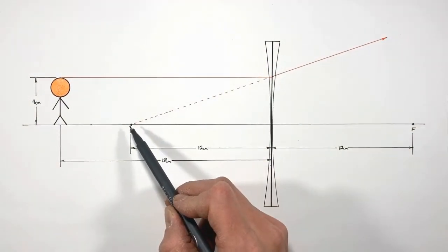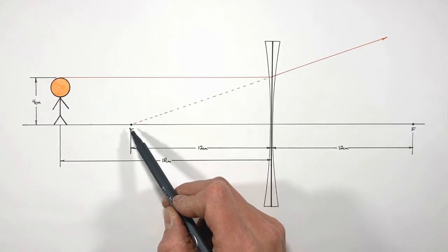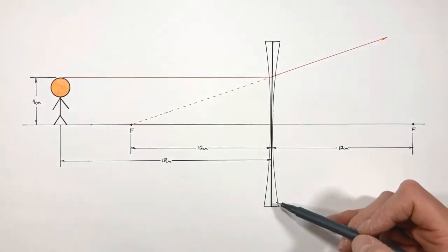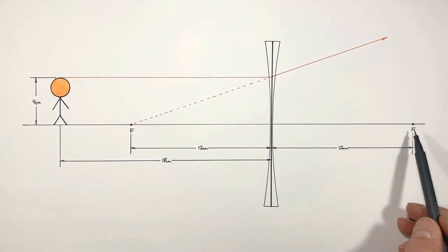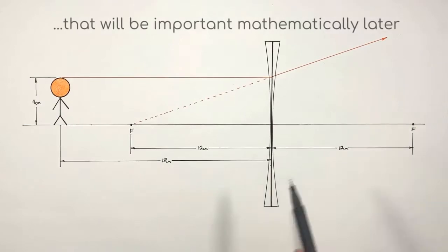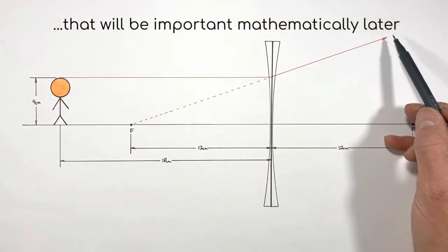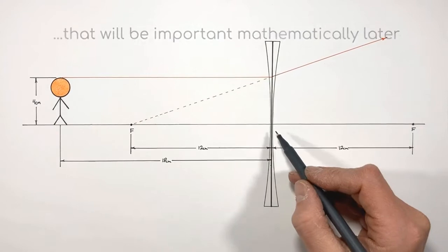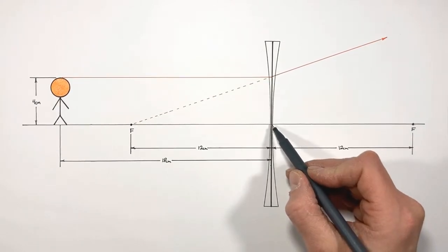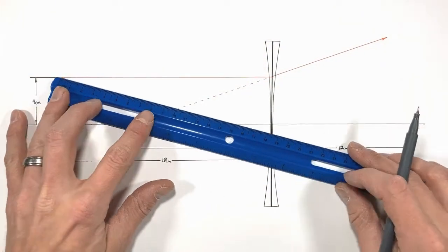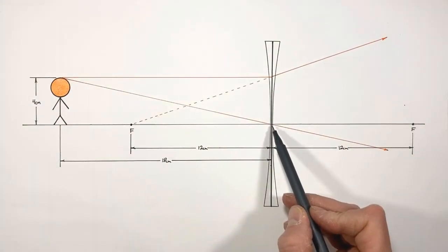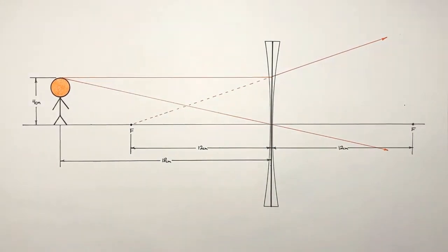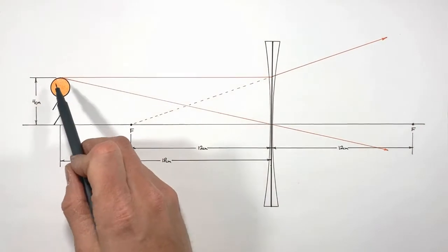When this principal ray strikes the lens it's refracted away from this focal point and appears to have originated from the focal point on the other side. When dealing with a concave lens, the focal points are effectively switched or reversed compared to a convex lens, and as a result this ray bends upward. The next ray is the central ray, which passes straight through the center of the lens and is not refracted in any direction — it just keeps going in a straight line.